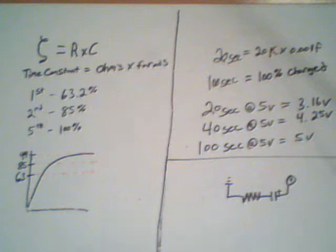If we know these two values, R and C, we can calculate the time constant of the circuit. The time constant is denoted by the character zeta, which is this little C looking thing here. And this is the formula.